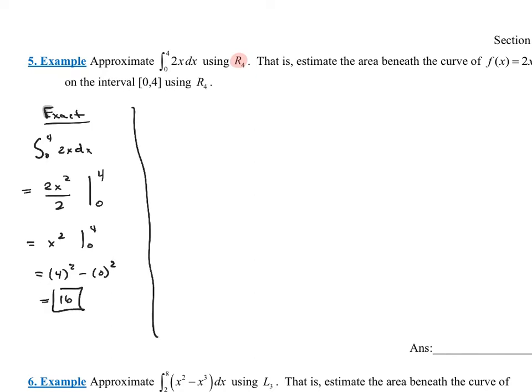That is not what this problem asked for. This problem said we want to estimate it. And if we want to estimate it or approximate it, we need to use rectangles. So let's approximate it using rectangles. Think about that process again. How many rectangles do I want? I want four rectangles. Which point am I going to be using? I'm going to be using the right endpoint of each one of those.